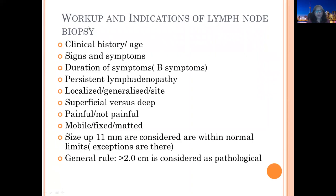When working up a lymph node for lymphoma, we need to look at the clinical history: age of the patient, signs and symptoms, duration of signs and symptoms — especially B symptoms — duration of the lymphadenopathy, site of the lymphadenopathy, whether it is localized or generalized, whether superficial or deep lymph nodes are involved, and whether those lymph nodes are painful or not, mobile or fixed or matted. Up to 11 mm is considered within normal range, and as a general rule, anything 2 cm or more is considered pathological.